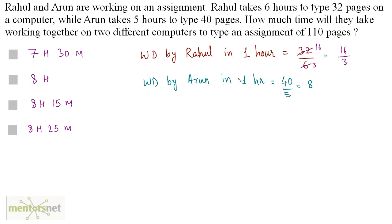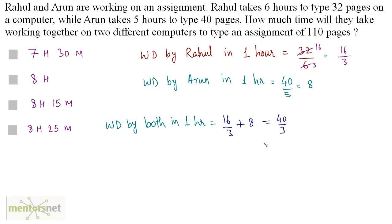We have the work done by Rahul in 1 hour and the work done by Arun in 1 hour. We can calculate the work done by both of them working together in 1 hour — that will be the addition of these two terms. Work done by both of them in 1 hour is equal to 16 by 3 plus 8, and that gives you 40 by 3, meaning they can type 40 by 3 pages together in 1 hour.